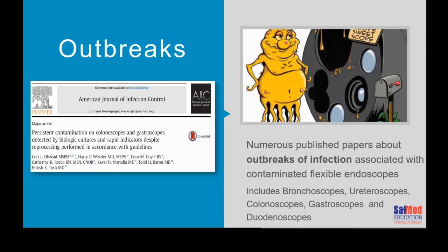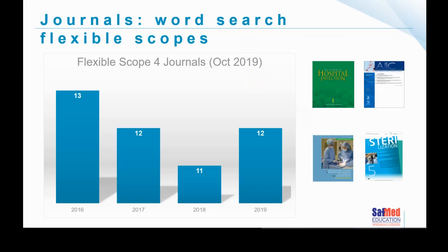Numerous published papers document outbreaks of infections associated with contaminated flexible endoscopes, including ureterinoscopes, colonoscopes, bronchoscopes, and duodenoscopes. A journal word search across Hospital Infection Control, American Journal of Infection Control, AORN, and the CSSD Journal Central Sterilization shows that over the last four years there have been numerous published papers dealing with flexible endoscopes. Flexible endoscopes remain a huge potential source of infection and cross-infection in all countries.